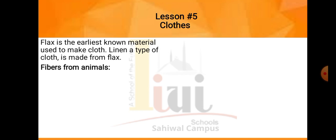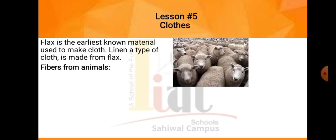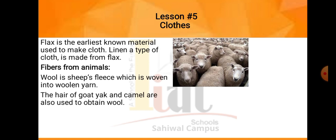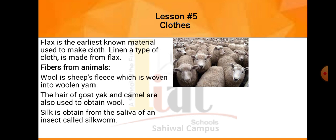Next source is fiber from animals. Animals se hum log fiber kaise hasil kertay hai. Wool is sheep's fleece, which is woven into woolen yarn. The hair of goat, yak and other animals are also used to obtain wool. Jo hum sheep ki jo khal hoti hai, usi se hum log bahut si apni clothes binaatay hai, jaise jackets woghera, ya jo yeh fur wali jackets woghera sari hoti hai, yeh hum uni se binaatay hai. Uske alawa, jo goat ke or camel ke hair hoti hai, usse bhi hum log wool binaatay hai. Silk is obtained from the saliva of an insect called silkworm. Ek insect hai silkworm, aur uska saliva hota hai, jis se hum log silk ka kapra binaatay hai.